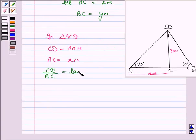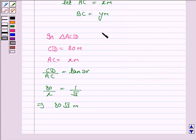Perpendicular upon base is equal to tan 30 degrees. Perpendicular is CD, basis AC is equal to tan 30 degrees. CD is 80 meter, this is x and tan 30 is 1 by root 3. So x is 80 root 3 meter.